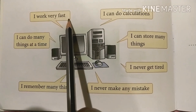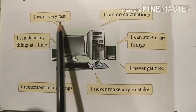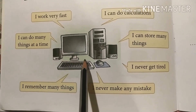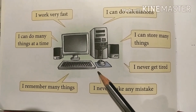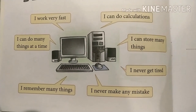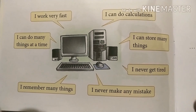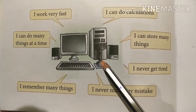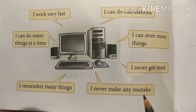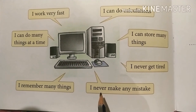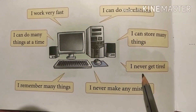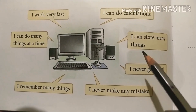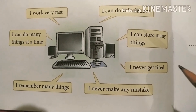First: I work very fast — mein bahut fast kaam karta hoon. Next: I can do many things at a time — mein ek time mein bahut se tasks perform kar sakta hoon. I remember many things — mein bahut si cheezein yaad rakh sakta hoon. I never make any mistake — mein kabhi koi mistake nahi karta. I never get tired — mein kabhi thakta nahi hoon. I can store many things — bahut se data ya information ko store kar sakta hoon.